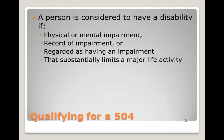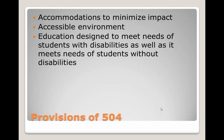So how does a student qualify for having a 504? A student qualifies when they are considered to have a disability. According to Section 504, a person has a disability if they have a physical or mental impairment, they have a record of impairment, or are regarded as having an impairment, and this impairment substantially limits a major life activity. Once a student has a 504 plan, it will provide accommodations to minimize the impact of their disability on their education. Services must be delivered in an accessible environment, and the education must be designed to meet the needs of students with disabilities as well as it meets the needs of students without disabilities.